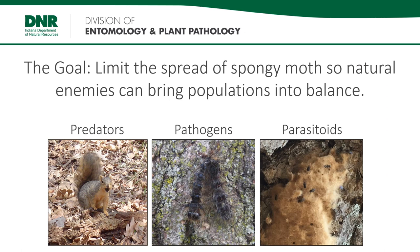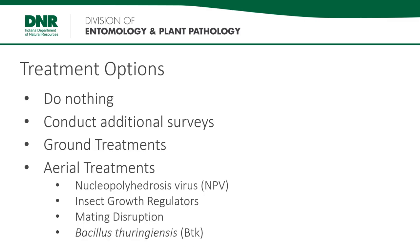The overall goal of the Slow the Spread project is to limit the spread of this pest so natural enemies can catch up with the leading edge of the infestation and help keep populations from becoming damaging. Mammals such as squirrels take time to adapt to potential new food sources. Meanwhile, pathogens and parasitoids take time to move into new areas and become effective controls of Spongy Moth populations. Spongy Moth will never be eradicated from Indiana, but we can manage the rate at which it moves through the state through various treatment options.